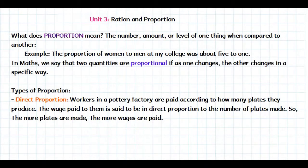I took this from a dictionary. This is the number or amount or level of one thing when compared to another. For example, the proportion of women to men at my college was about 5 to 1.